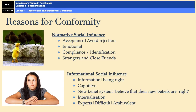People are most likely to conform due to informational social influence when there is an expert present — somebody who you think has more information than you — or if whatever is happening is difficult and you don't believe you can do it, and therefore believe others can do it better. Or if the situation you are in is ambiguous, meaning confusing. If you're in a confusing situation, people will go along with the majority because they don't really know how to act, assuming the majority have more information.